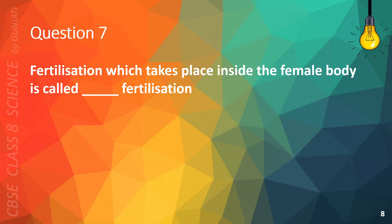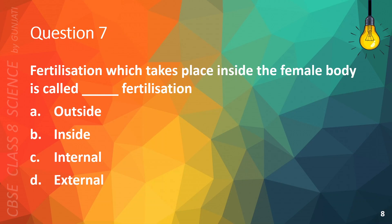Question 7. Fertilization which takes place inside the female body is called blank fertilization: A. Outside, B. Inside, C. Internal, or D. External. The correct answer is C. Internal.